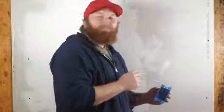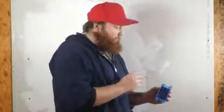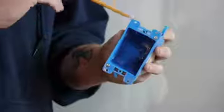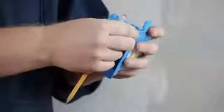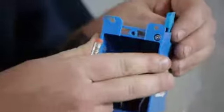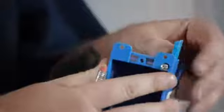These wing boxes are designed to be installed on already installed drywall. You slide it into the hole that you cut out and when you start to tighten this screw down, it flips this wing up and compresses the drywall in between the front lip and the wing.